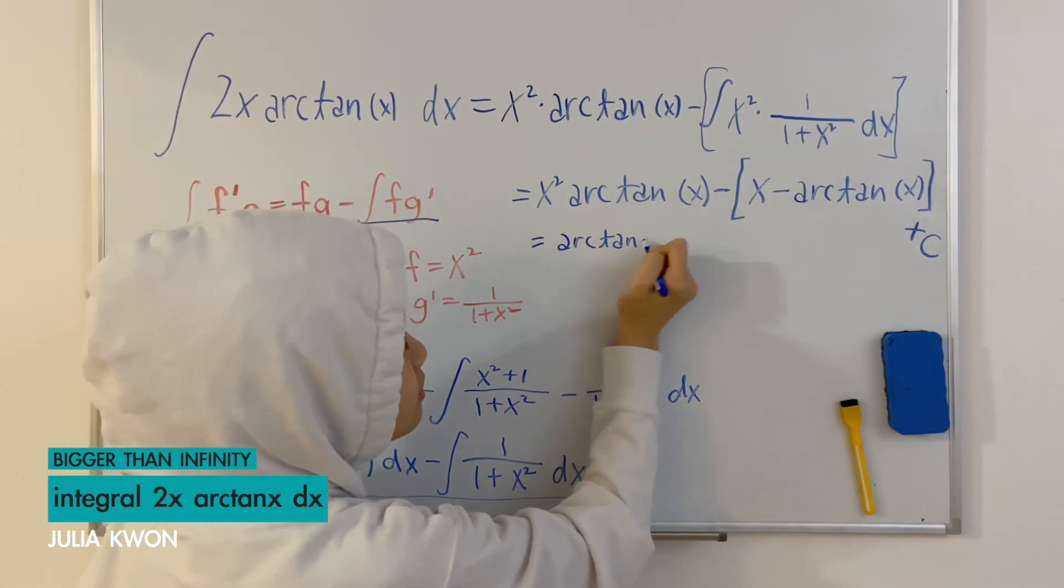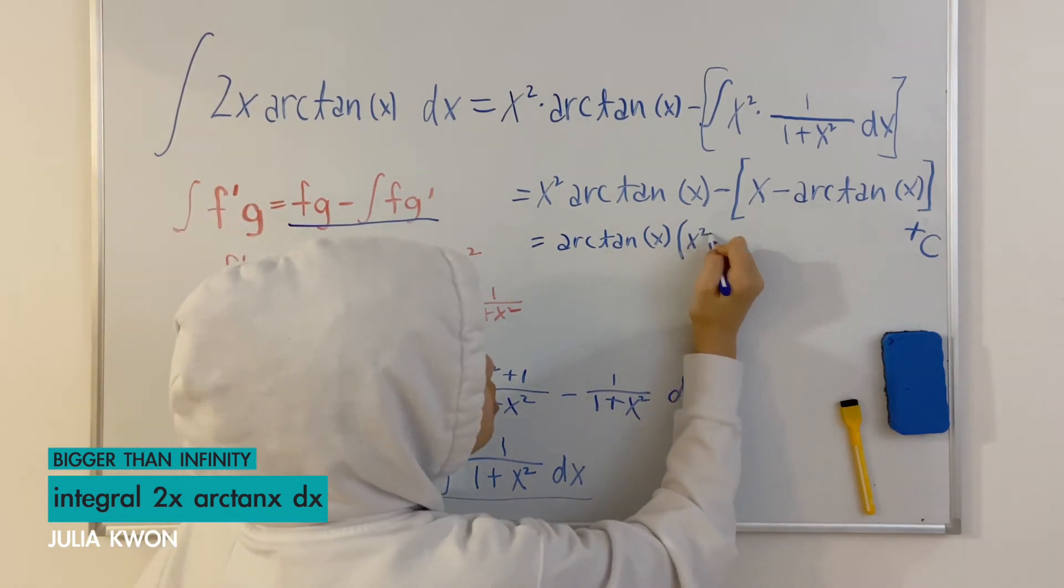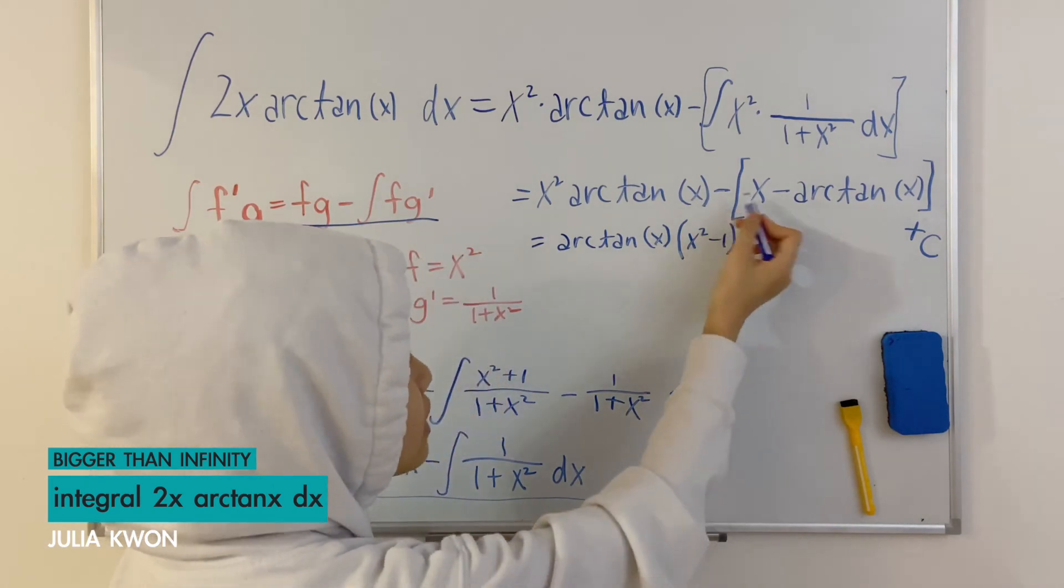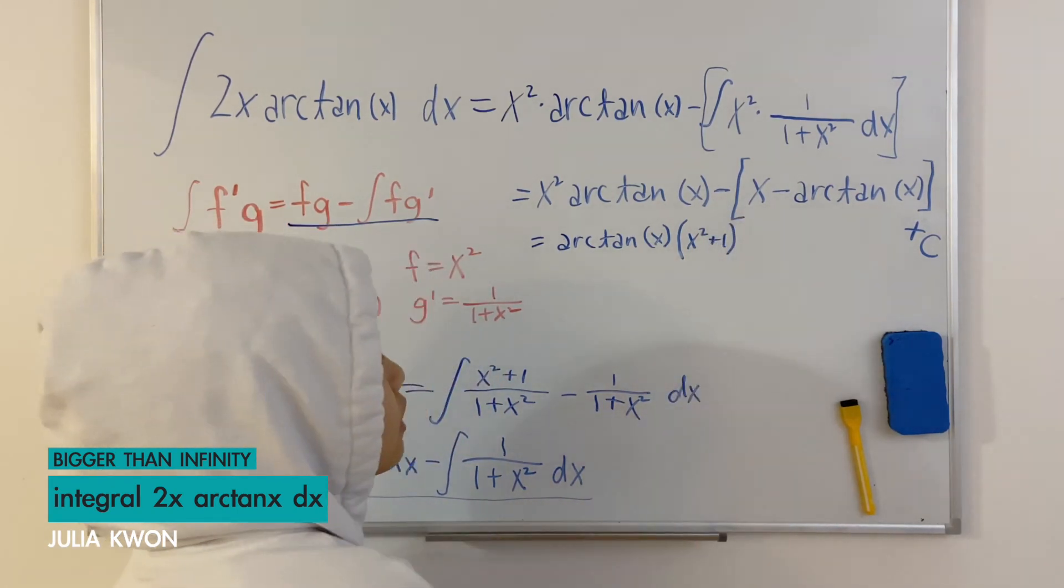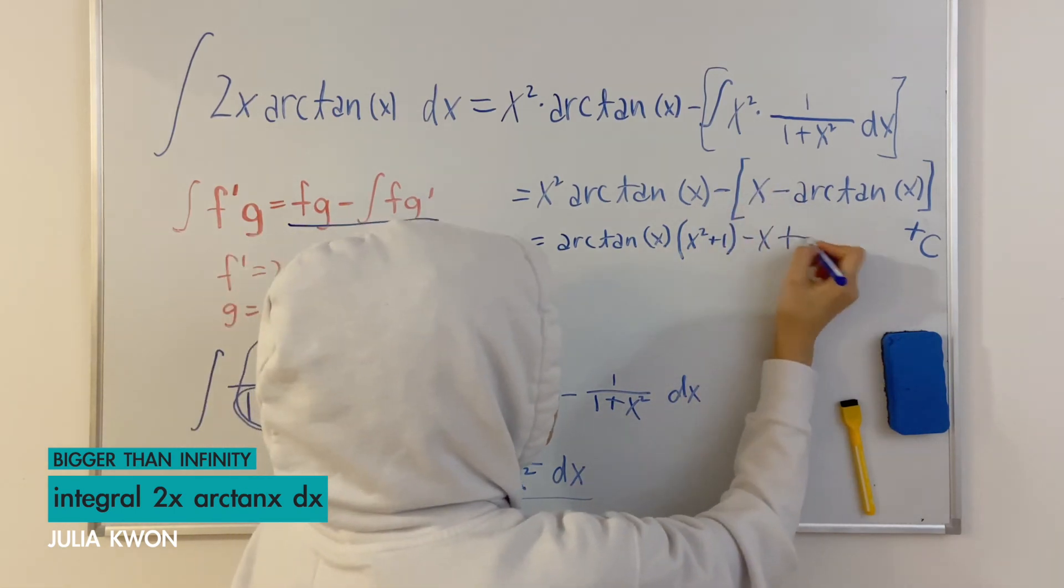Arctangent x multiply that with x squared minus 1 plus 1 and minus x from this one and plus constant.